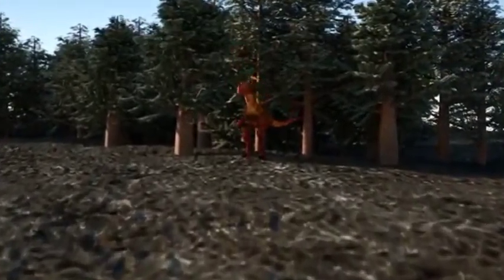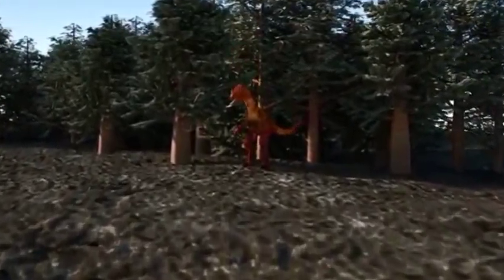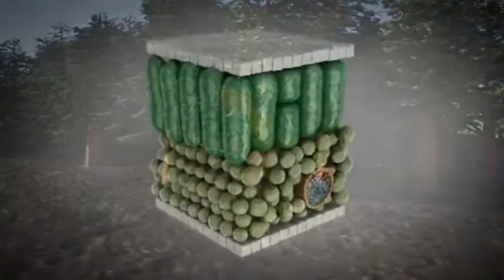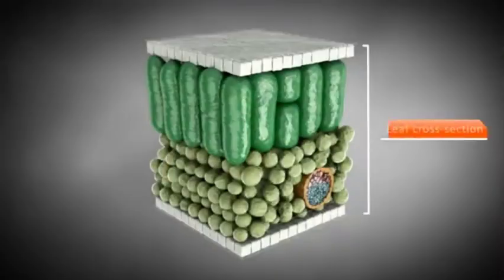Photosynthesis takes place in leaves of flowers, bushes and trees. First, let's find out what a leaf looks like.